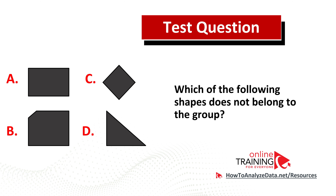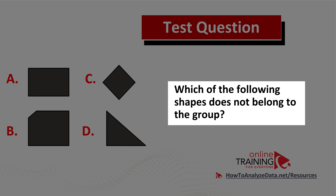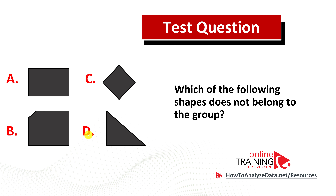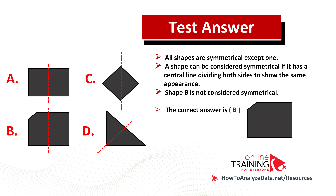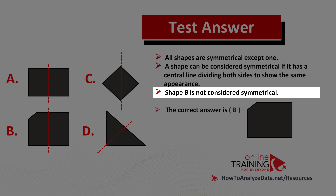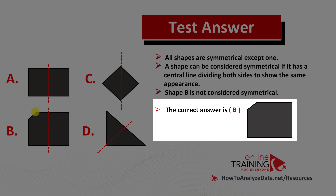Let's look at an interesting question from the real test. Which of the following shapes does not belong to the group? You have four different choices. Do you think you know the answer? Give yourself about 20 seconds to see if you can come up with the answer. The similarity here is being symmetrical — a shape can be considered symmetrical if it has a central line dividing both sides to show the same appearance. Shape B is not symmetrical, so the correct choice is choice B.